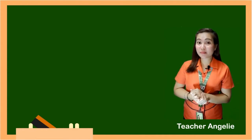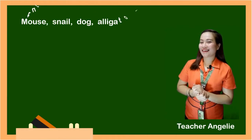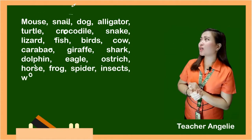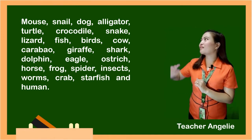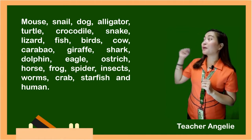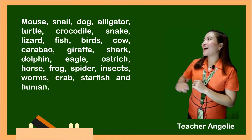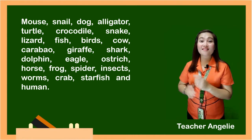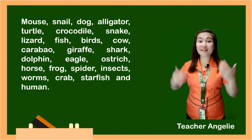And what are the animals shown in the video? Yes! There is a mouse, snail, dog, alligator, turtle, crocodile, snake, a lizard, a fish, birds, cow, caribou, a giraffe, shark, dolphin, eagle, ostrich, a horse, frog, spider, insects, worms, crabs, starfish, and human.